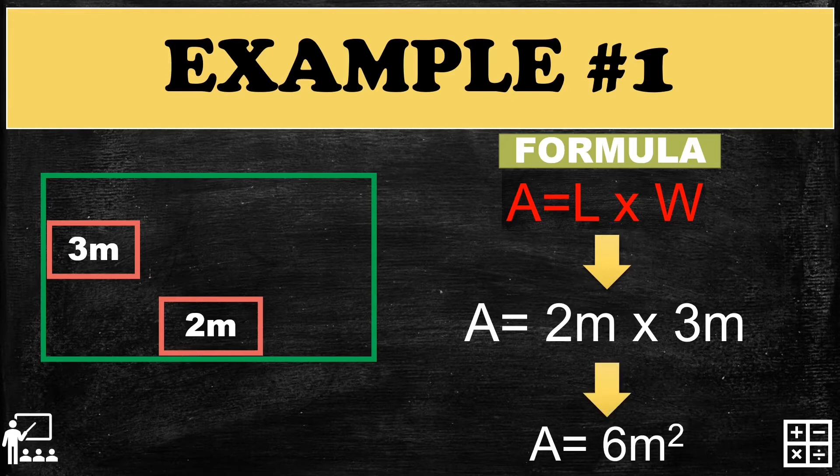We multiply the length and width: two times three gives us six. The unit is meters times meters, which gives you meters squared. So the answer for this example is A equals six meters squared.